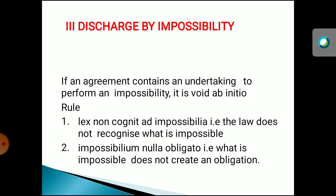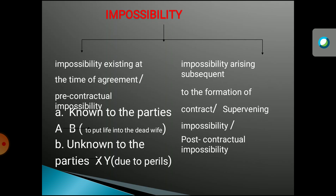The third situation is discharge by impossibility. If an agreement contains an undertaking to perform an impossibility, it is void ab initio. If some situation exists which is totally impossible to perform, the contract will not only become void but also get discharged — it becomes void ab initio. Impossibility is of two types: impossibility existing at the time of agreement, called pre-contractual impossibility, and impossibility arising subsequent to the formation of contract.